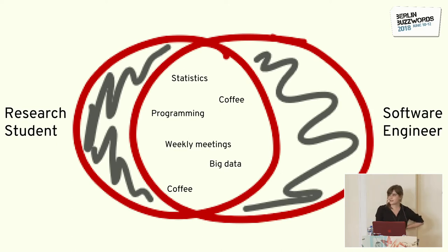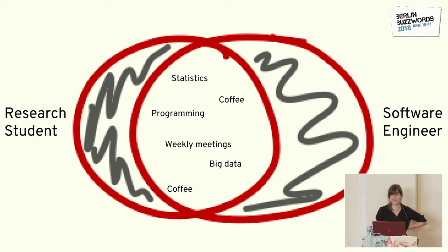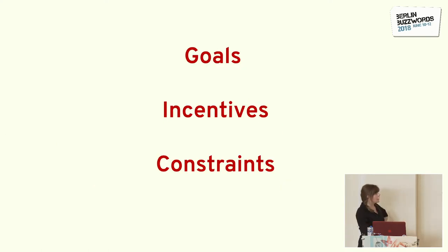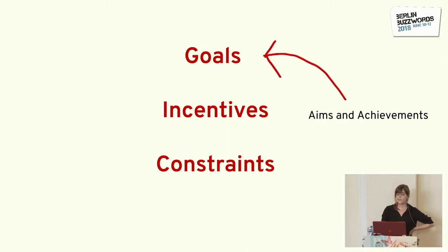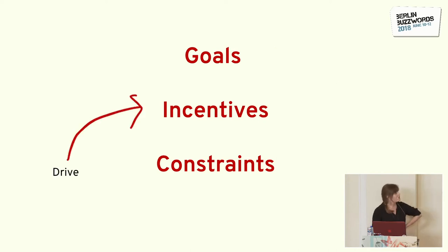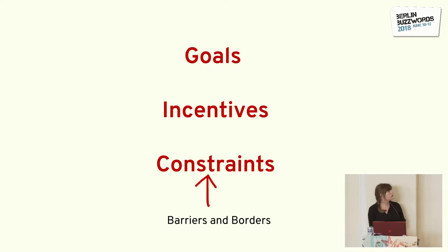Everyone else — it doesn't take a statistician to tell you that it's highly likely that you will, at some point in your career, work with someone who is or was a grad student. So hopefully you can gain insight into where they're coming from and how you can support them as they turn up on day one at your office's door. To structure my talk, we'll look at three objectives. For both academia and industry, we'll begin by talking about the goals of the work. We'll then look at what drives the work, or what's the incentive. And finally, we'll look at some barriers to progress in both academia and in industry.